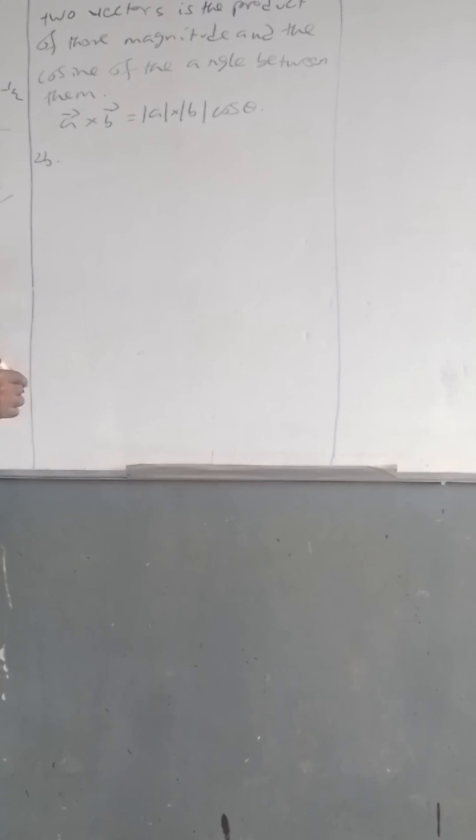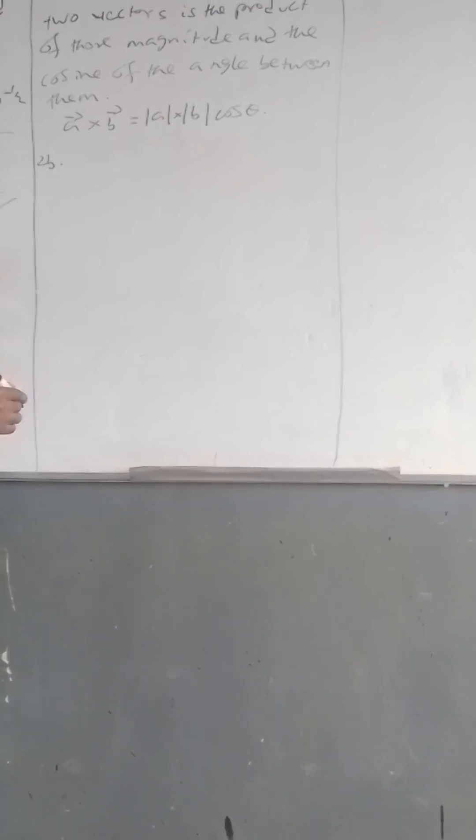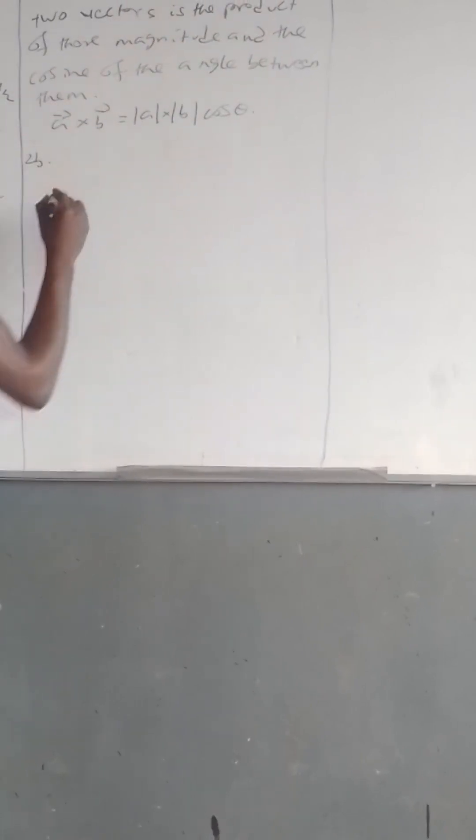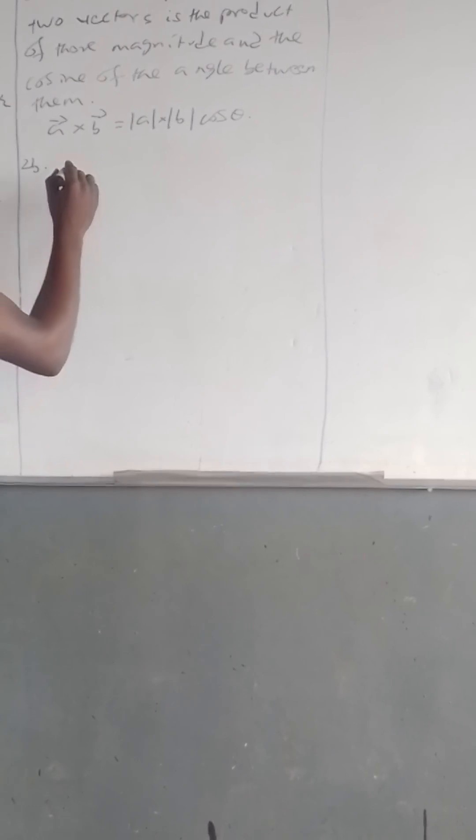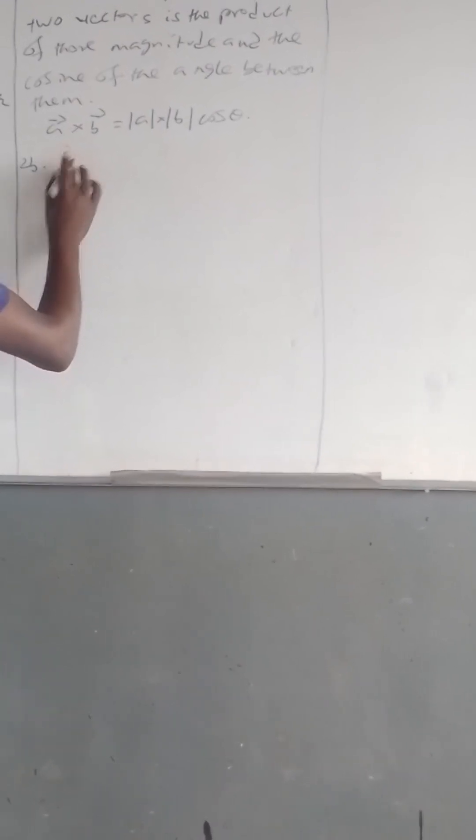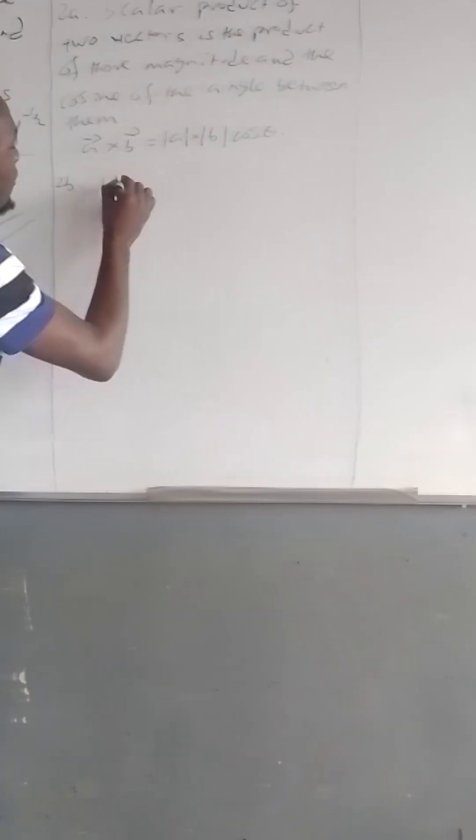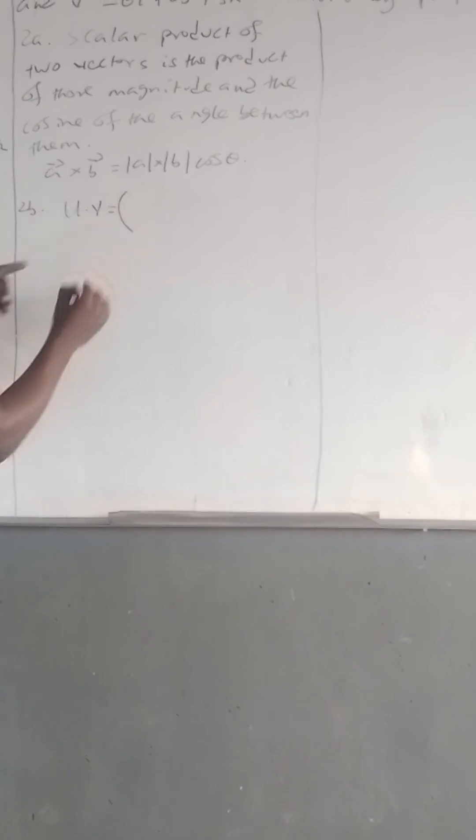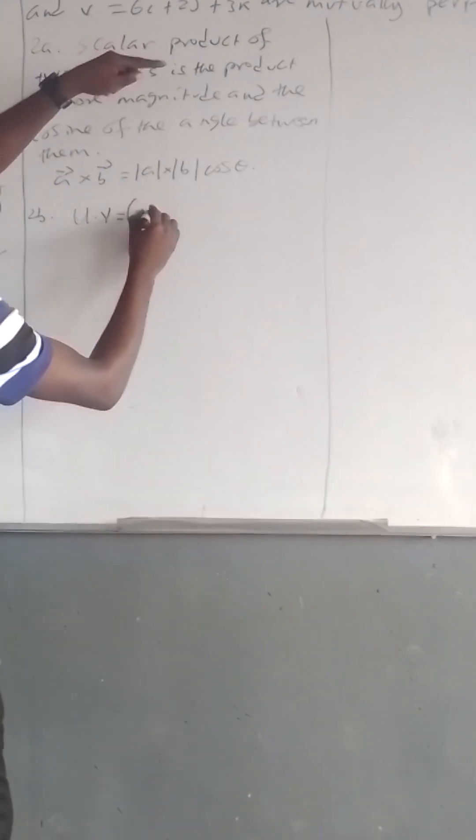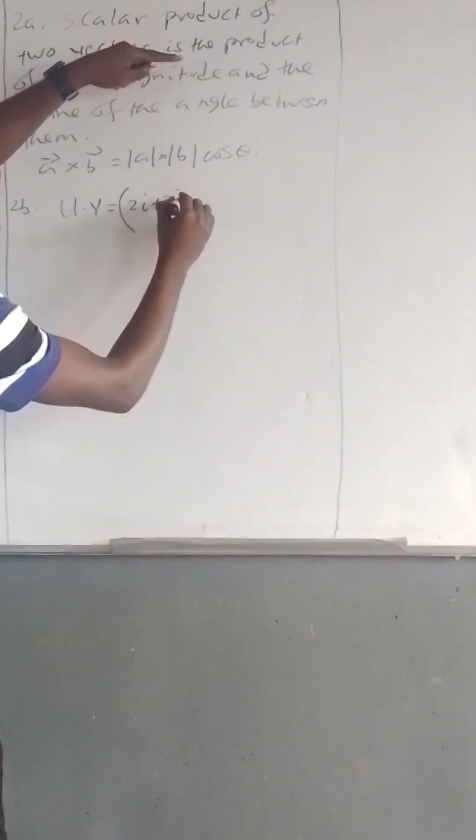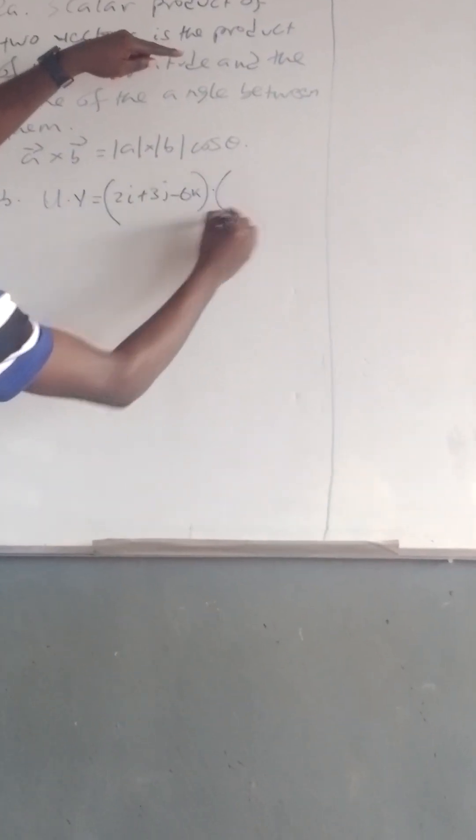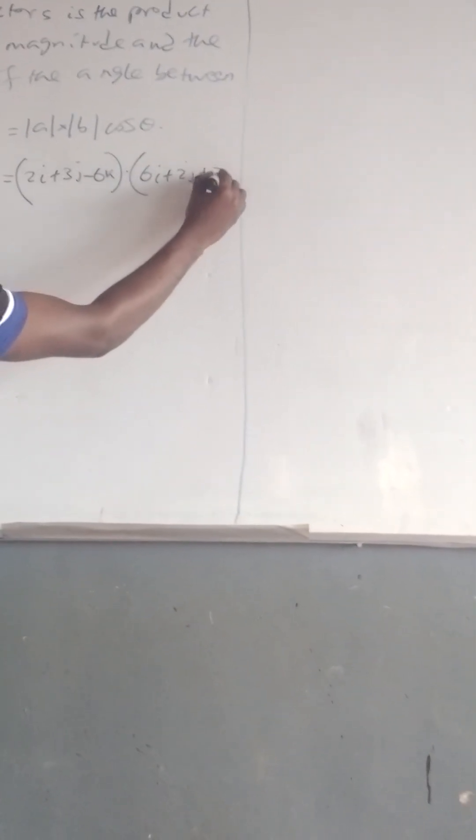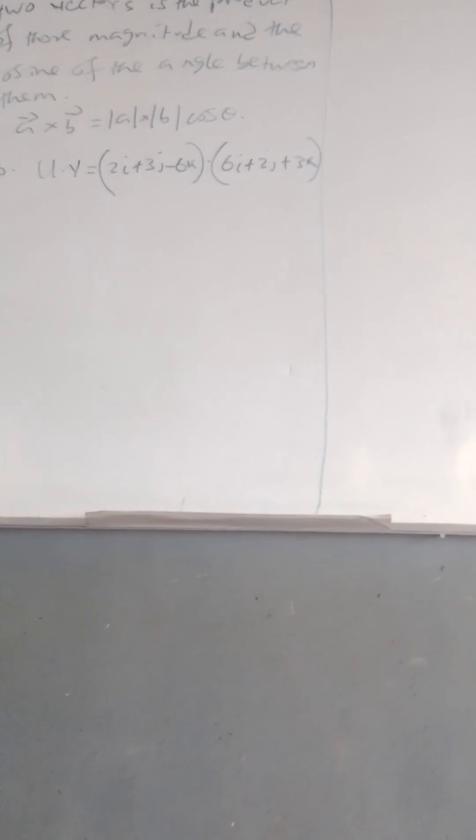Since the dot product must equal zero, we calculate vector u dot vector v. Vector u = 2i + 3j - 6k, and vector v = 6i + 2j + 3k. Now u dot v must equal zero.